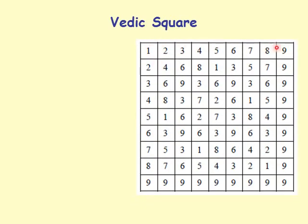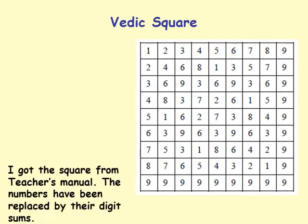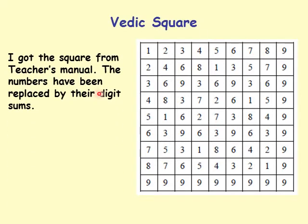This is the Vedic square. I got this square by replacing the entries in the multiplication table with their digit sums. I also got this table from the teacher's manual. So the numbers have been replaced by their digit sums.